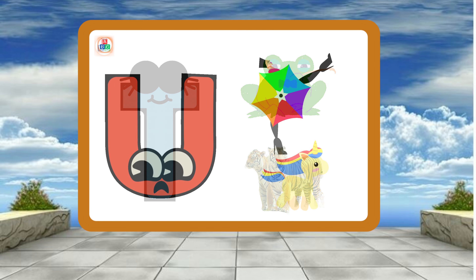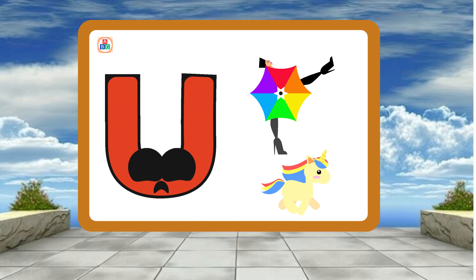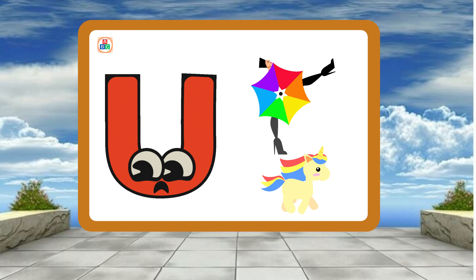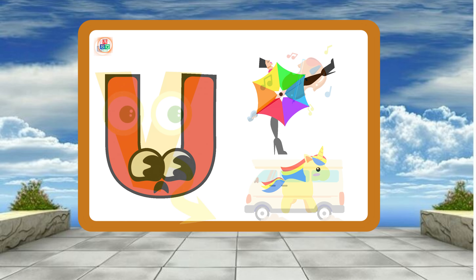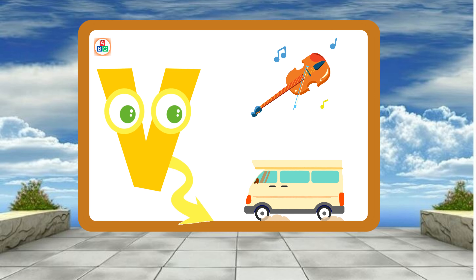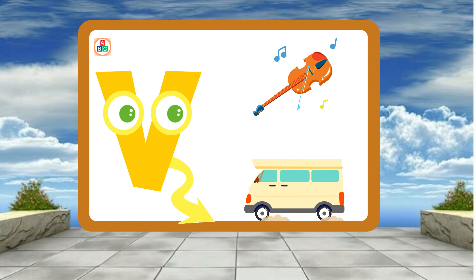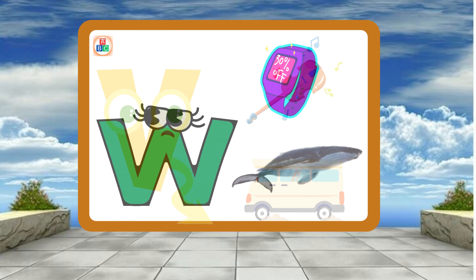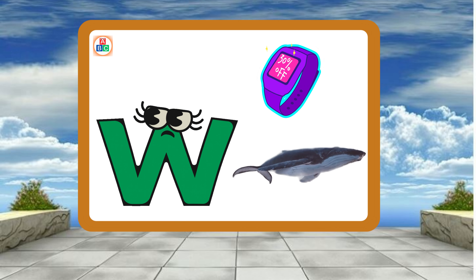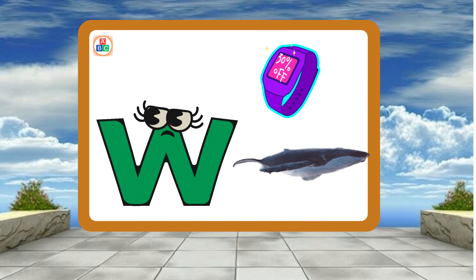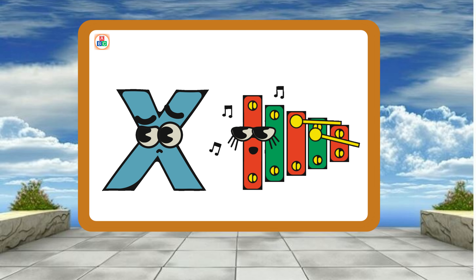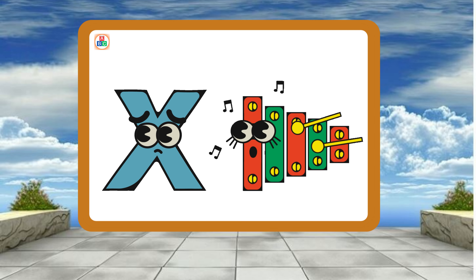U is for Umbrella. U-U-Umbrella. V is for Violin. V-V-Violin. W is for Watch. W-W-Watch. X is for Xylophone. X-X-Xylophone.